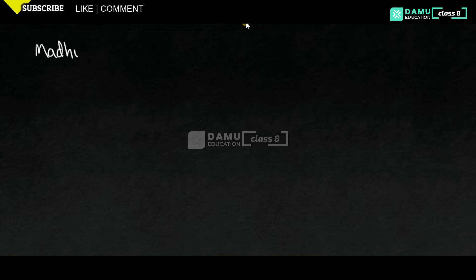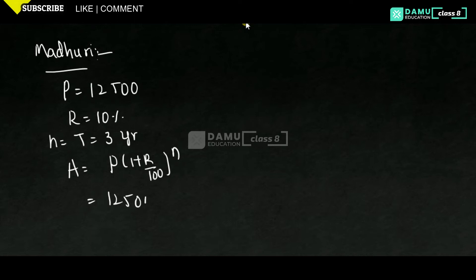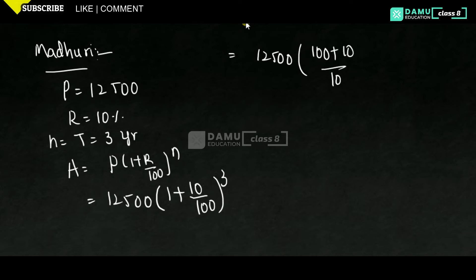For Madhuri: P = 12,500, R = 10%, T = 3 years, compounded annually. Amount = P × (1 + R/100)^n = 12,500 × (1 + 10/100)³ = 12,500 × (110/100)³ = 12,500 × (11/10)³.